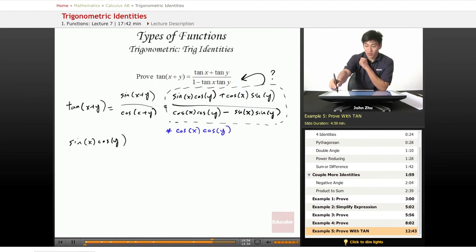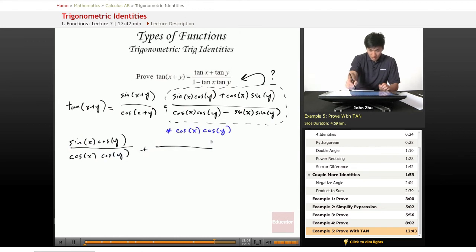So then let's go ahead and write that out. Sine of x cosine of y over our term cosine of x times cosine of y plus the next term over cosine of x times cosine of y...